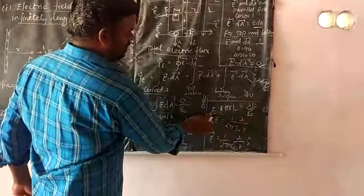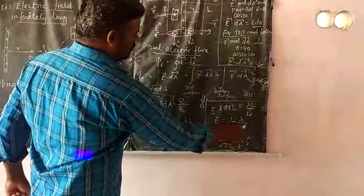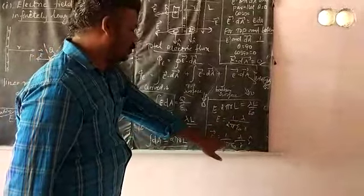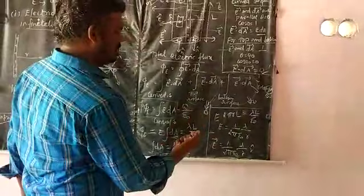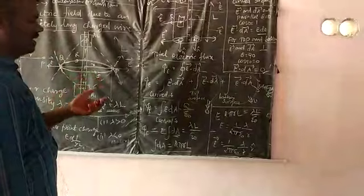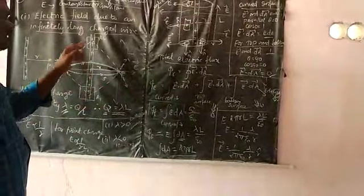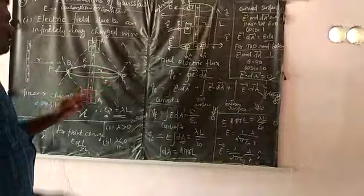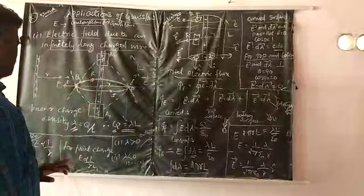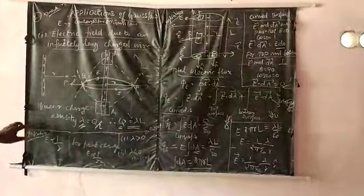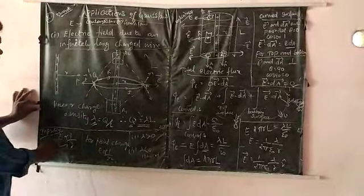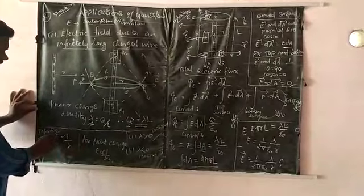Therefore, the electric field E equals lambda divided by 2 pi epsilon-zero R, in the R-hat direction. R-hat is the unit vector acting outward from the positive charge distribution, indicating the direction of the electric field. The electric field due to an infinitely charged wire varies inversely with R. As the distance increases, the electric field decreases.